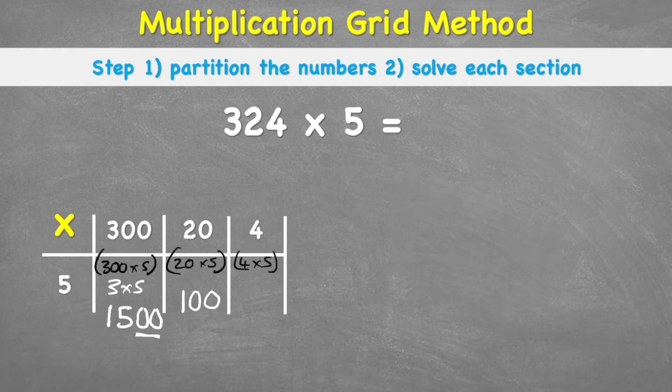And last but not least, my final box says 4 times 5. No need for any happy numbers. So I can just do 4 times 5, which is 20. And there we go. That is working out all the individual sections.